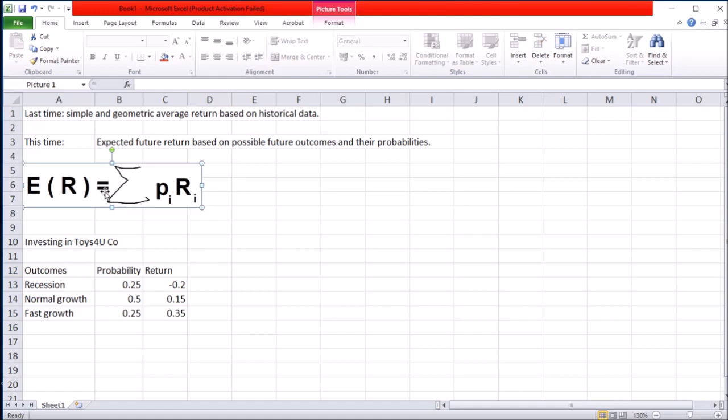So we're gonna look at expected future returns based on a range of possibilities for that future. Generally we're gonna look at this formula where expected return is the sum of all the products of possible returns and the probabilities of those possible returns taking place.